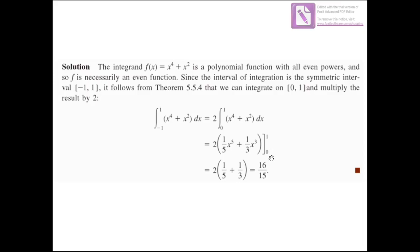We evaluate from 0 to 1. Replacing x by 1 gives 1 over 5 plus 1 over 3. When x equals 0, both terms are 0. So the result is 2 multiplied by (1/5 + 1/3), which equals 16 over 15. Note that you could also evaluate this directly using the antiderivative x⁵/5 + x³/3 from minus 1 to 1, but using the even function rule is simpler.